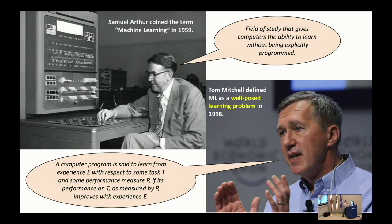In 1998, Tom Mitchell, another American ML researcher, decided to put more substance into the definition by posing it as a well-posed learning problem. He said machine learning ought to be defined as a computer program that learns from experience with respect to some task and some performance measure, such that it improves with experience.